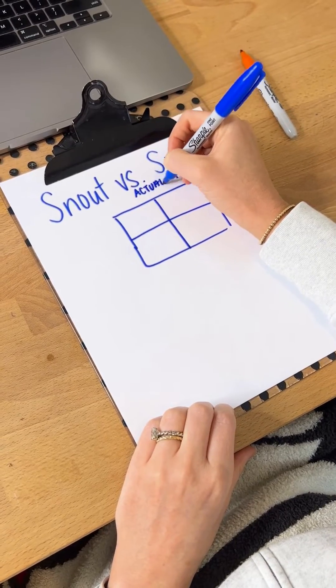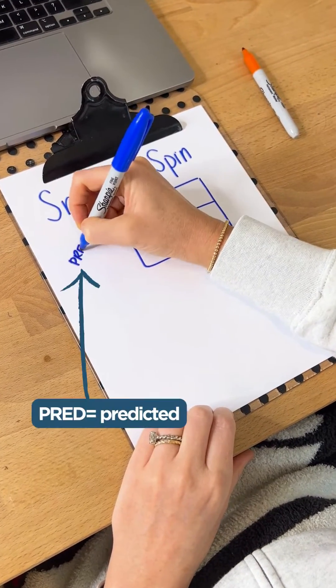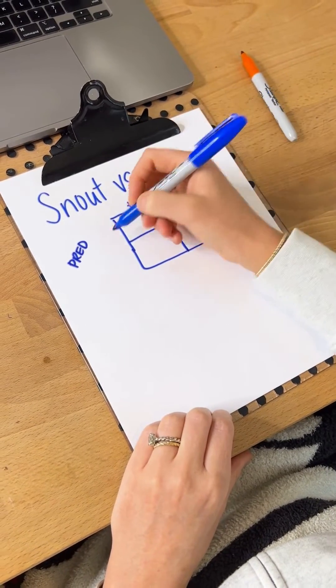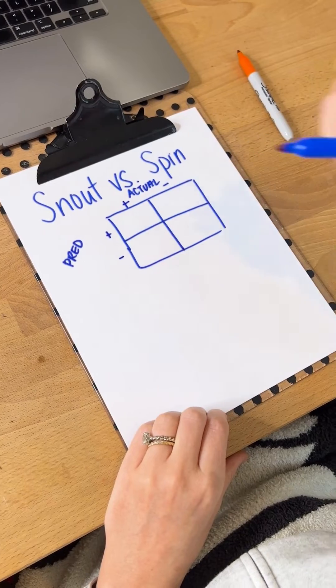You're going to write 'actual' on the top and 'predicted' on the side. Now with your actual, you're going to draw a positive and a negative, and again for predicted, a positive and a negative.